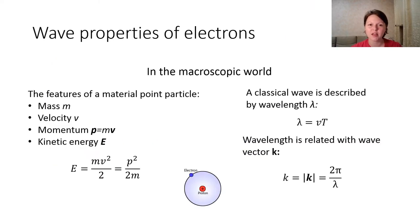So, in the macroscopic world, the simplest physical model is a material point particle or mass point particle. It is also a body whose dimensions can be neglected. The main features of the material point particle is that it has mass, velocity, momentum and kinetic energy that can be calculated like this.